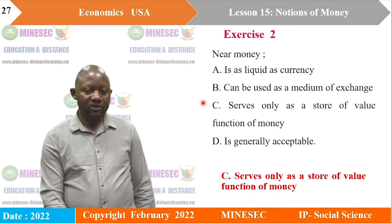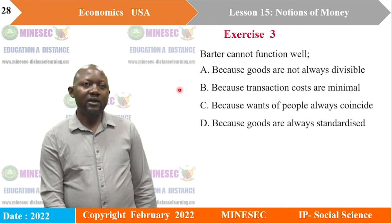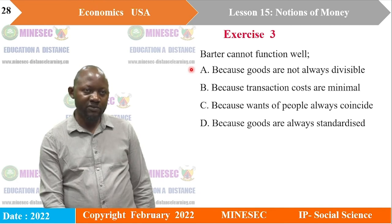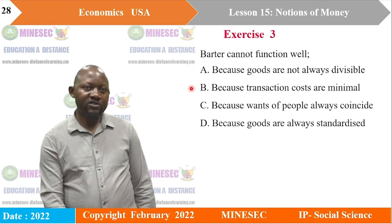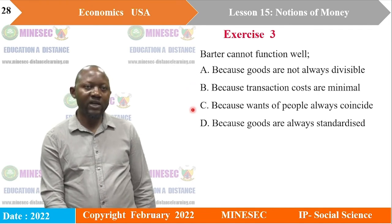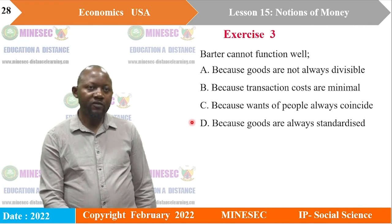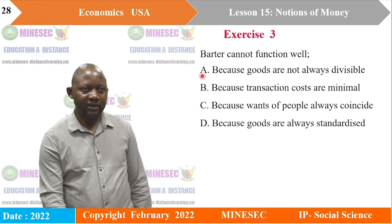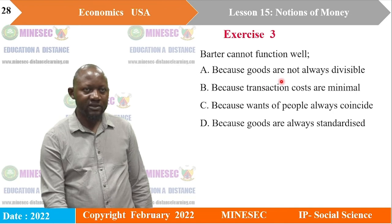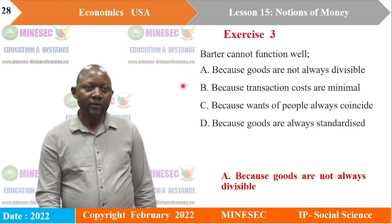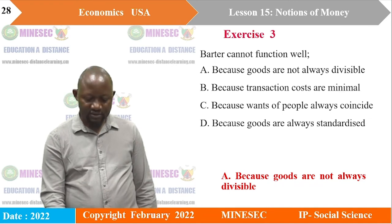Barter cannot function well: A) because goods are not always divisible, B) because transaction costs are at a minimum, C) because the wants of people always coincide, or D) because goods are always standardized. One of the main drawbacks of barter was the indivisibility of goods, which would make barter not function well. So A — because goods are not always divisible — is the correct answer.